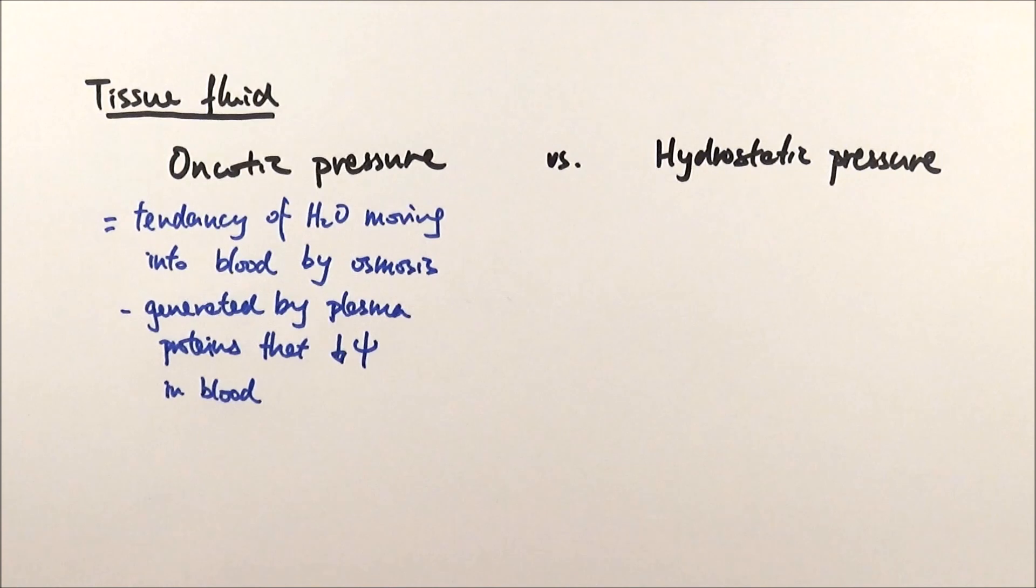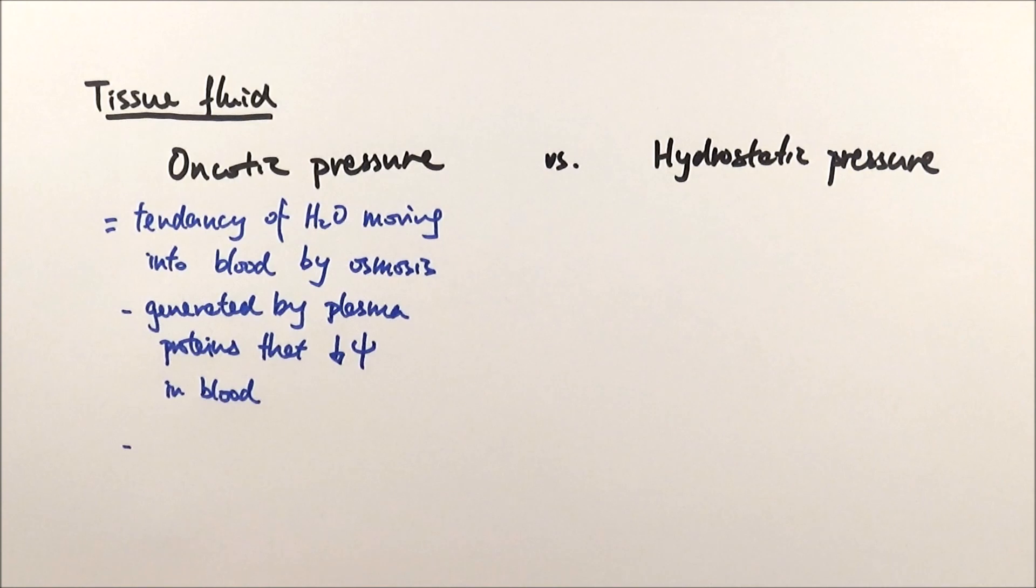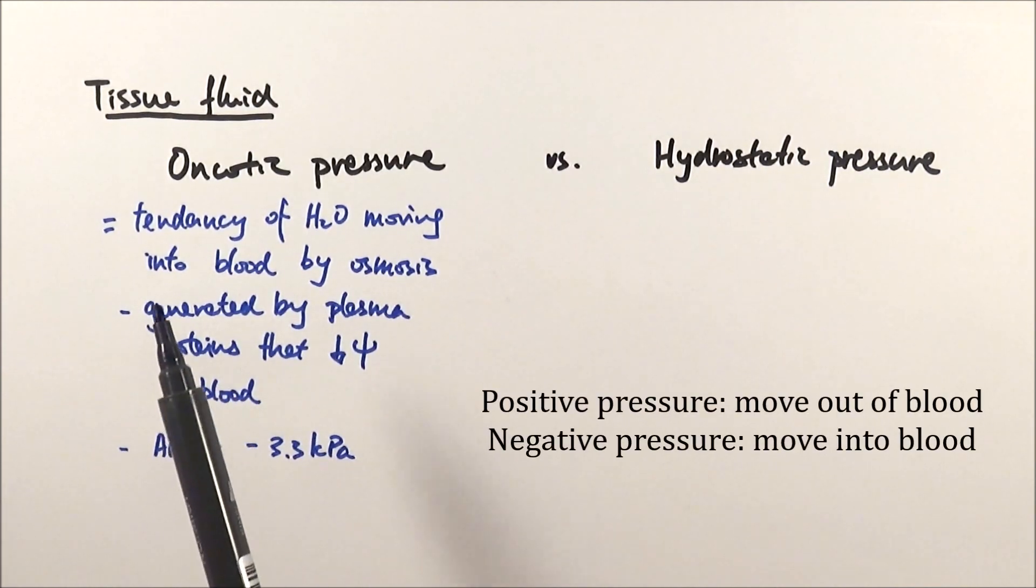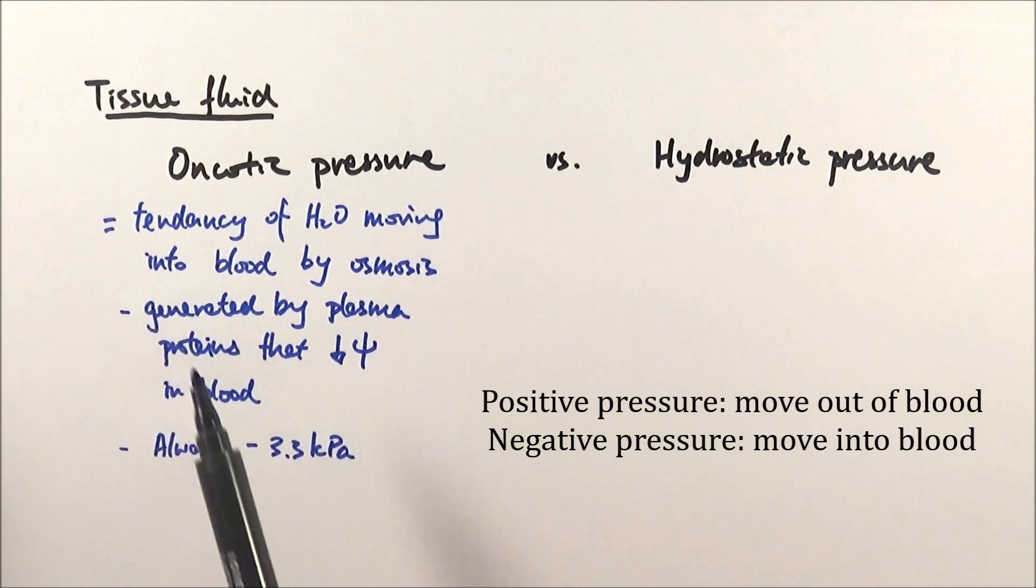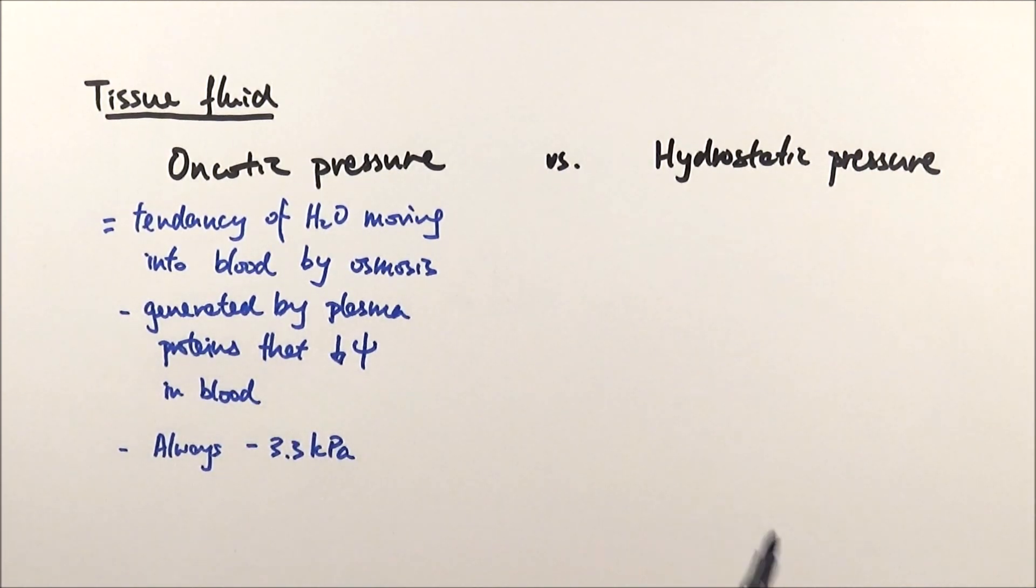Because these plasma proteins are so big, they never leave the bloodstream, so the oncotic pressure will always stay the same at minus 3.3 kPa. If it's a minus pressure, it refers to substances wanting to move into the blood. If it's a positive kPa, positive pressure, it means substances are moving out of the blood, which will be the case in hydrostatic pressure.